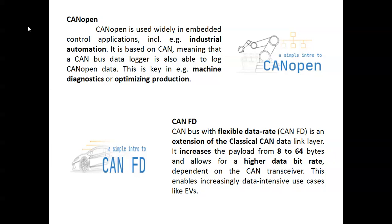CAN FD (CAN with Flexible Data Rate) is an extension of the classical CAN data link layer. It increases the payload from 8 to 64 bytes and allows higher data bit rates depending on the CAN transceiver. This enables increasing data-intensive use cases like electric vehicles (EVs).